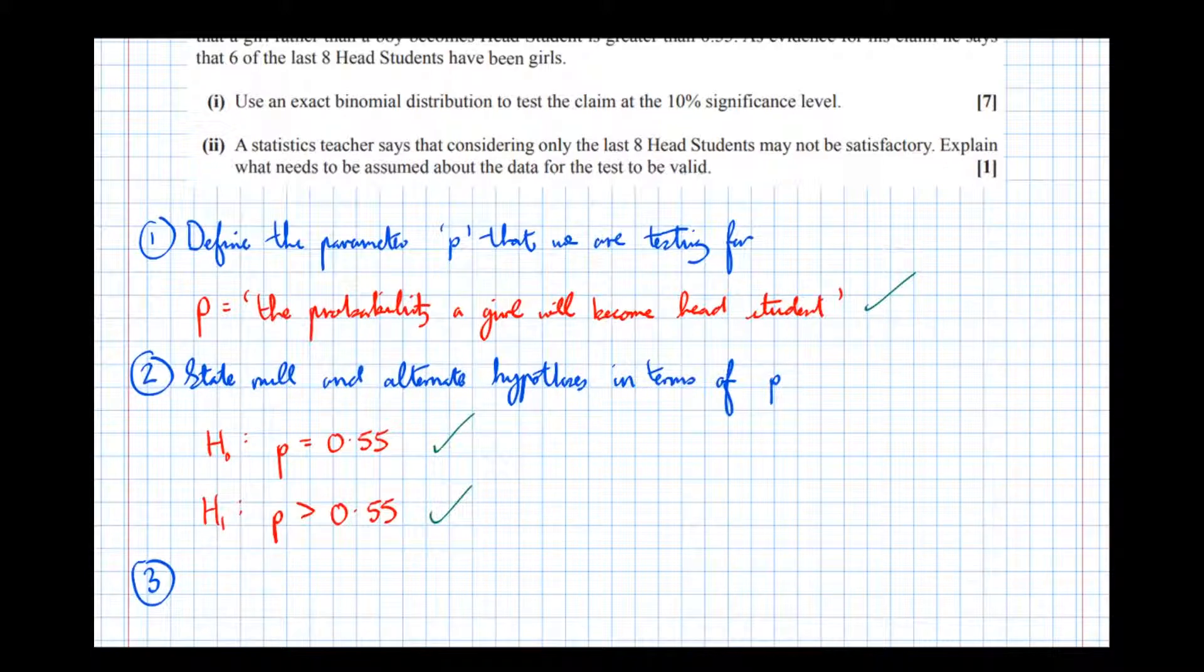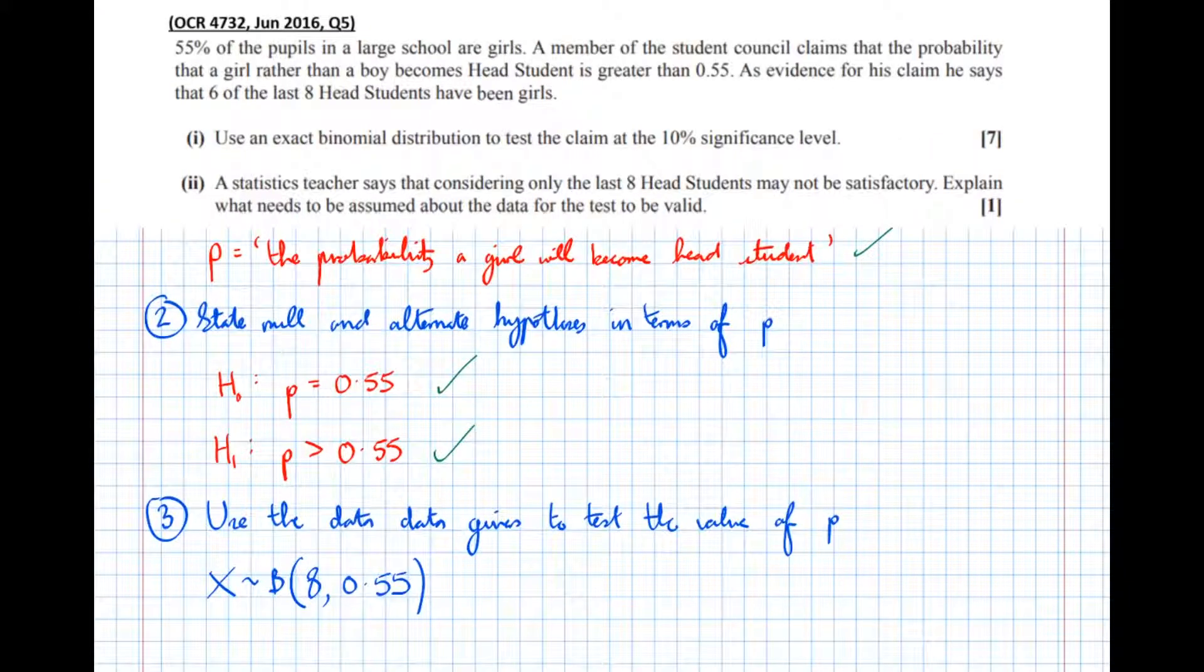So step three. We use the data given to test the value of p. Now this, I think, is the most complicated step to understand. So to help us understand, let's think of this analogy here.